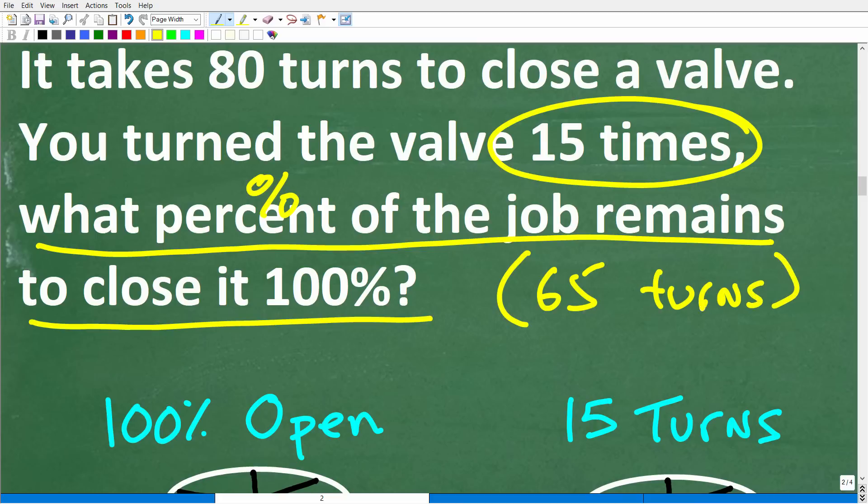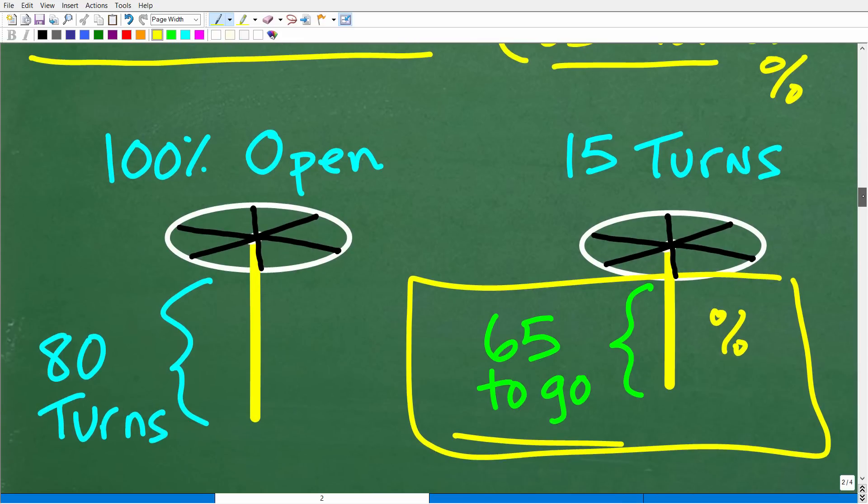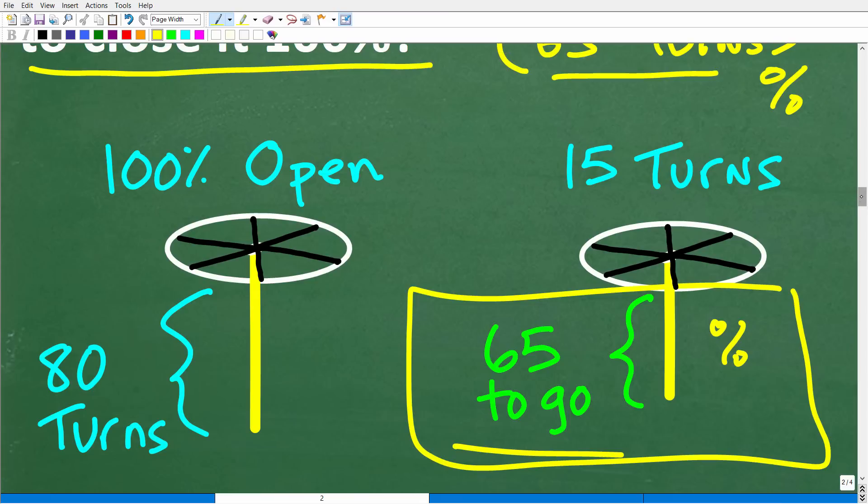But of course, we're not interested in turns. We're interested in what percent that those 65 turns represent. All right, so hopefully this is making sense. Again, you have to have some basic percent knowledge to solve this question.